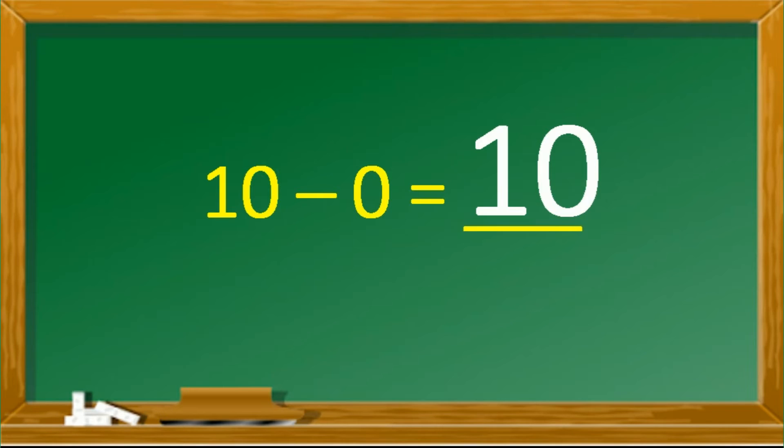Remember, children. Any number that you subtract from 0, the answer is still the number itself. Because it doesn't matter. Because 0 doesn't have a value here. Another one. 10 minus 5.